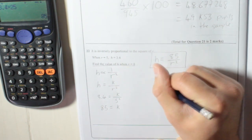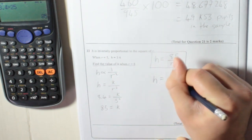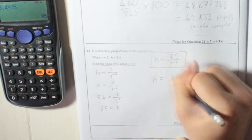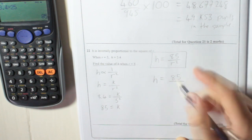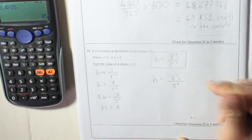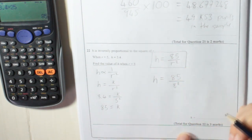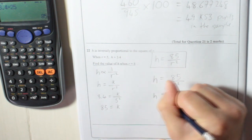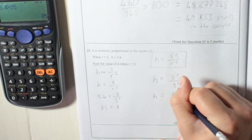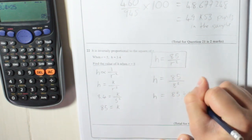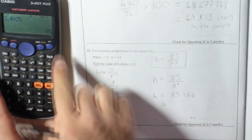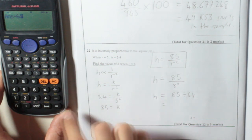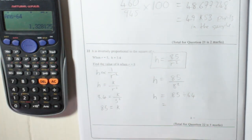So, find the value of h. So h is equal to 85 divided by r squared. It says find the value of h when r is 8. So it's going to be 8 squared, which is 8 times 8, 64. So h equals 85 divided by 64, and I've already got 85 in my calculator. So divide that by 64, and I get 1.328125.